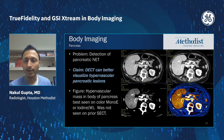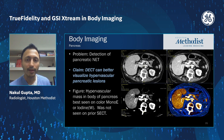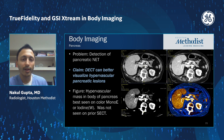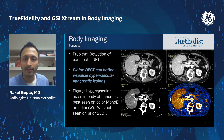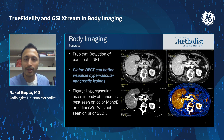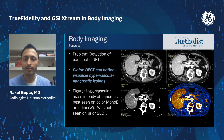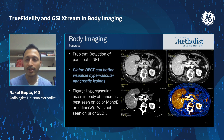Another use case in the pancreas is neuroendocrine tumors or hypervascular pancreatic lesions. This patient had a single energy scan done a few months prior which didn't show any abnormality, but the surgeon was convinced the patient had an insulinoma based on labs and clinical presentation, so a follow-up dual energy study was done. On the 120 kVp-like image it's very difficult to appreciate a subtle hypervascular mass in the body of the pancreas, but at 50 keV with the color map applied — and certainly on the iodine map — a hypervascular lesion is much more plainly visualized.